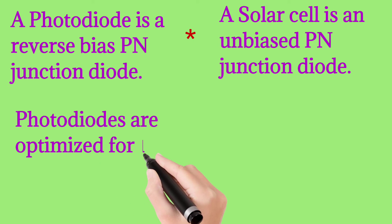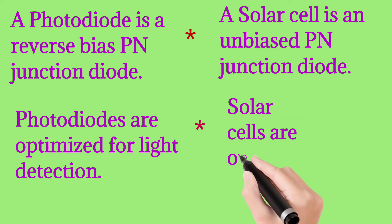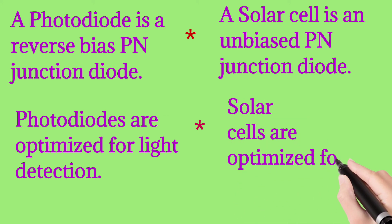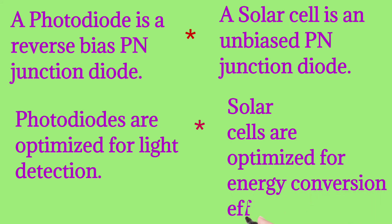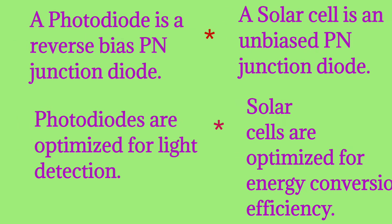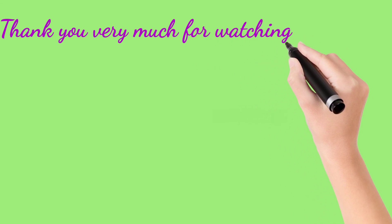Photodiodes are optimized for light detection — they are most effective in light detection. Whereas solar cells are optimized for energy conversion efficiency — they are most effective in energy conversion. So these are the difference points between a photodiode and a solar cell. Thank you very much for watching my video.